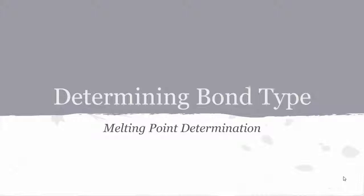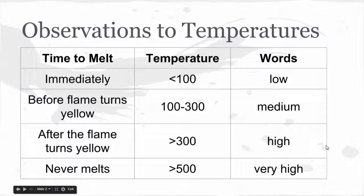We have 12 different crystals and we need to be able to determine when they melt. So there's some observations about when or how quickly these samples will melt. If they melt immediately, we're going to write down less than 100 or you could also use a relative word like low. If they melt before the flame turns yellow, it's going to be in the 100 to 300 range which would be medium. If they melt after the flame turns yellow, it'd be greater than 300 which would be high, and if they never melt, we're going to write down very high.